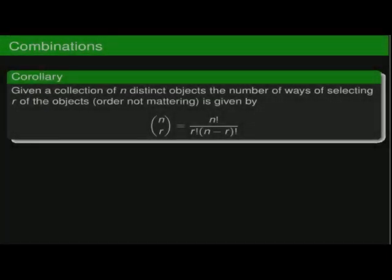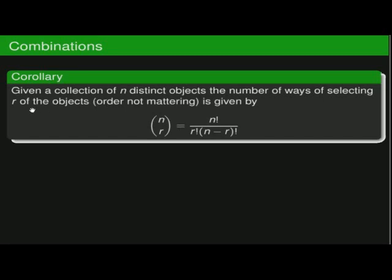The second counting formula we'll get a lot of use out of counts combinations. Given a collection of n distinct objects, we want to know the number of ways we can select r objects when we don't care about the order. How many ways is it possible to choose r things from n things? That formula is n factorial divided by r factorial times (n minus r) factorial.